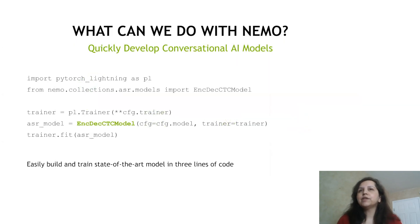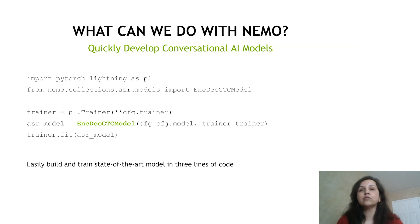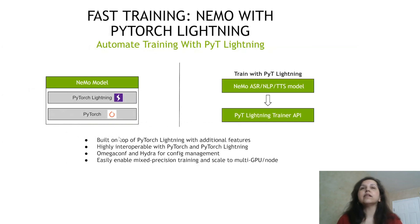So what can we do with Nemo? You can quickly develop conversational AI models. The highlight of this release is PyTorch Lightning. Building conversational AI models is a hard task, and PyTorch Lightning makes it really easy to train these models. Here you can see a simple example of how we use the trainer module. Every Nemo model is actually a PyTorch Lightning module, which provides mixed precision training and scaling for multiple GPUs and nodes.